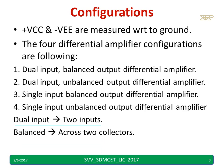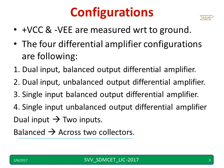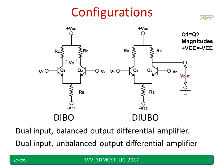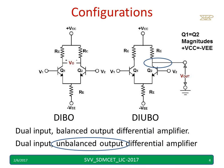For dual input, the name itself gives the information — we have two inputs given to both transistors. When I say balanced, the output is taken across the two collectors. This diagram shows the dual input balanced output; balanced output indicates I am taking from two collectors. When I say unbalanced, I take the output at one collector with respect to ground.